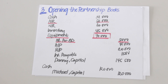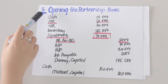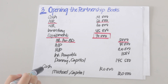When converting two sole proprietorships into a partnership, you simply go through steps 1 and 2 — revaluation and closing the books — for each sole proprietorship, and then proceed to step 3 to form the partnership by making the opening entries.